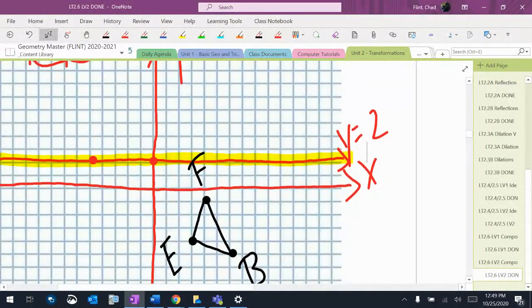So I'm going to plot the reflected points for the first transformation. Counting out the positions for points after reflection over y equals 2.